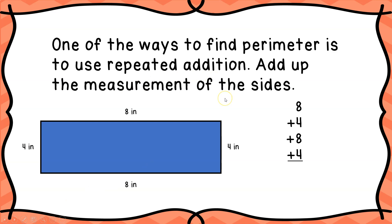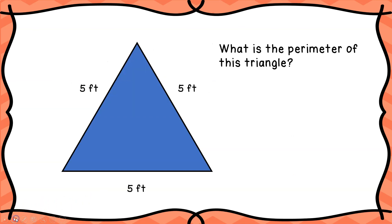If you look at this rectangle, we see that the sides are measured eight inches, four inches, eight inches, and four inches. So if I take eight plus four, that gives me twelve; plus eight more is twenty; plus four more gives me twenty-four. Eight plus four plus eight plus four equals twenty-four. The perimeter of this rectangle is twenty-four inches.